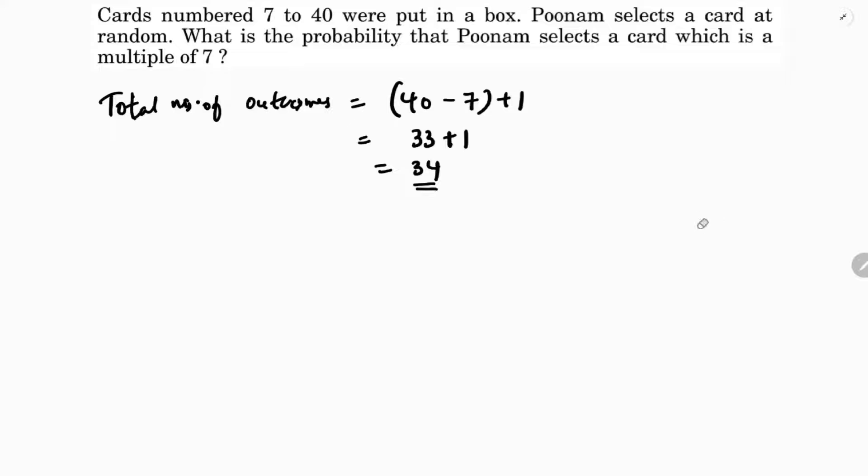Now favorable outcomes. First, let me write the formula: Probability of an event is number of favorable outcomes by total number of outcomes. Total number of outcomes in this case are 34.